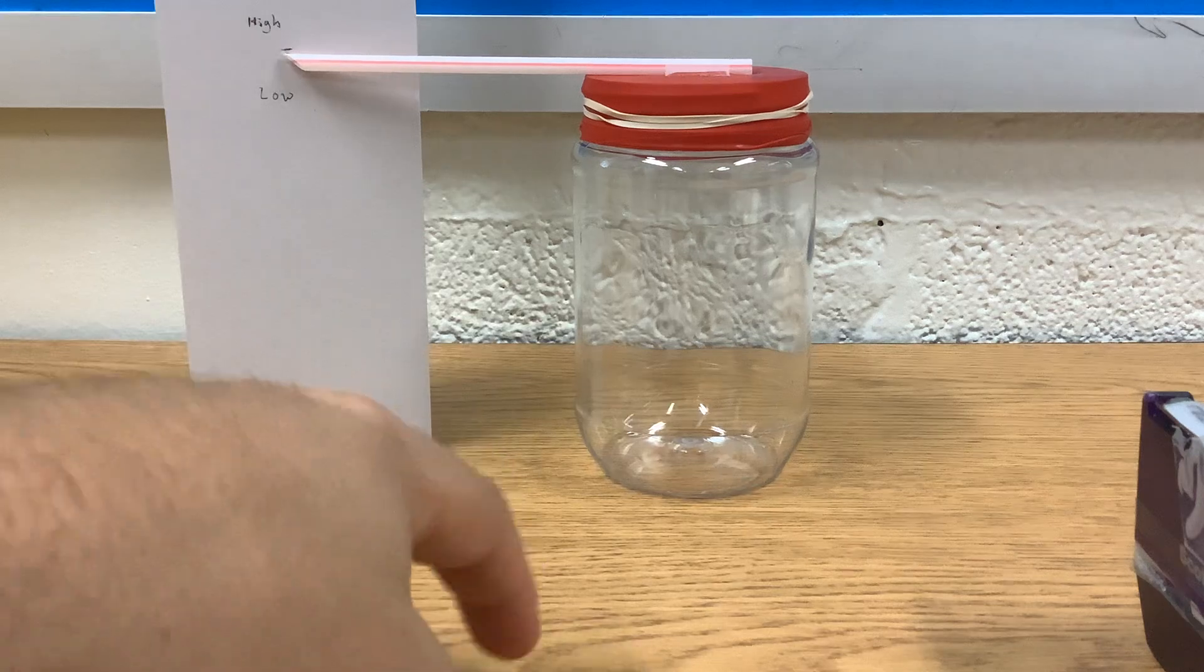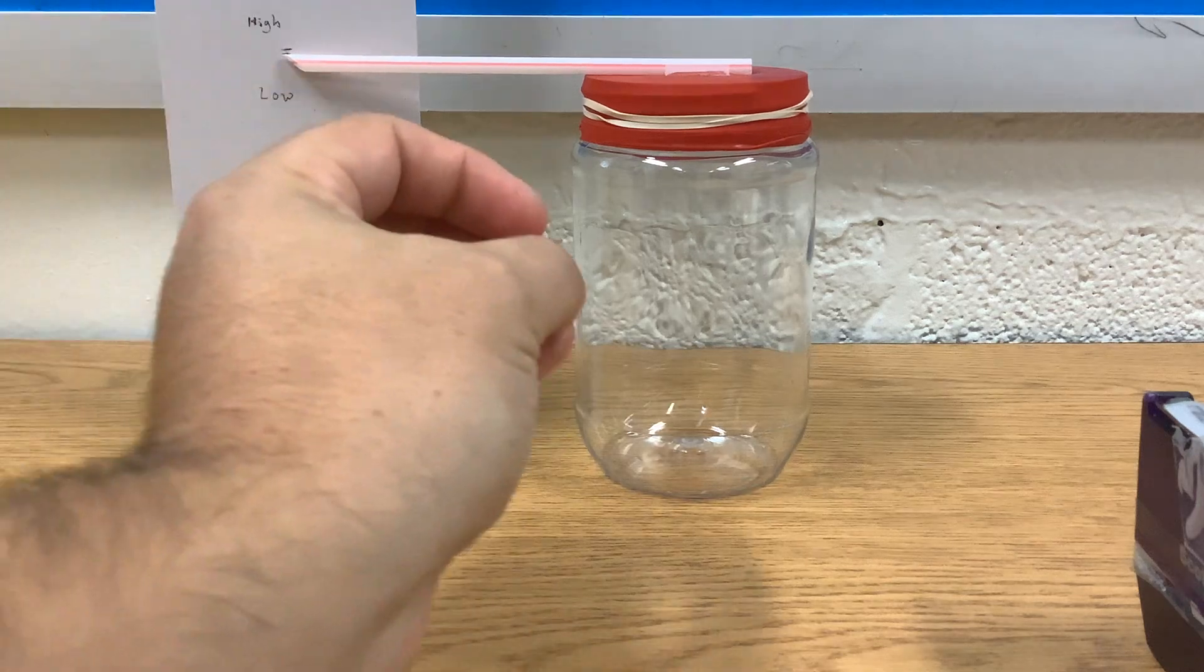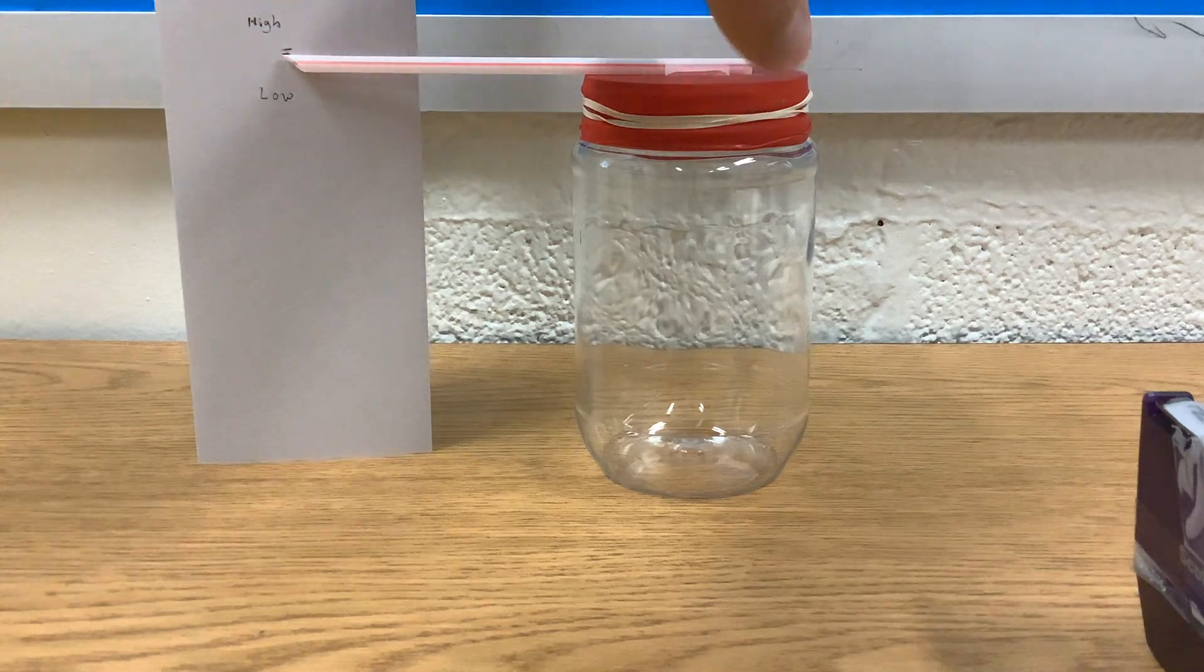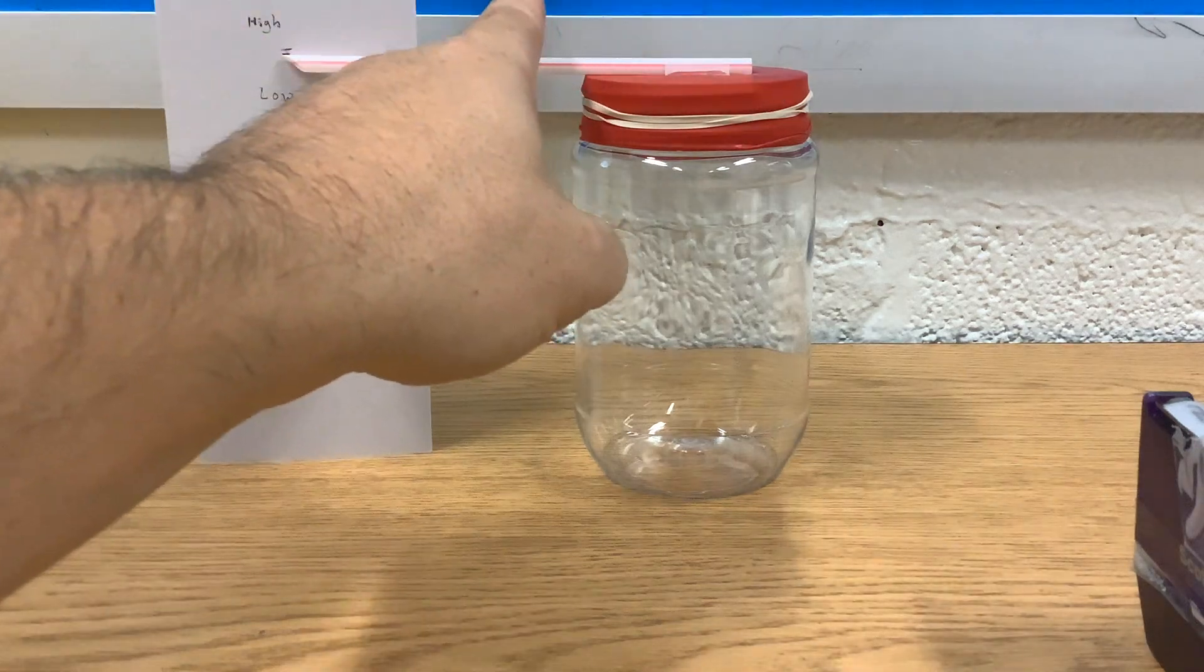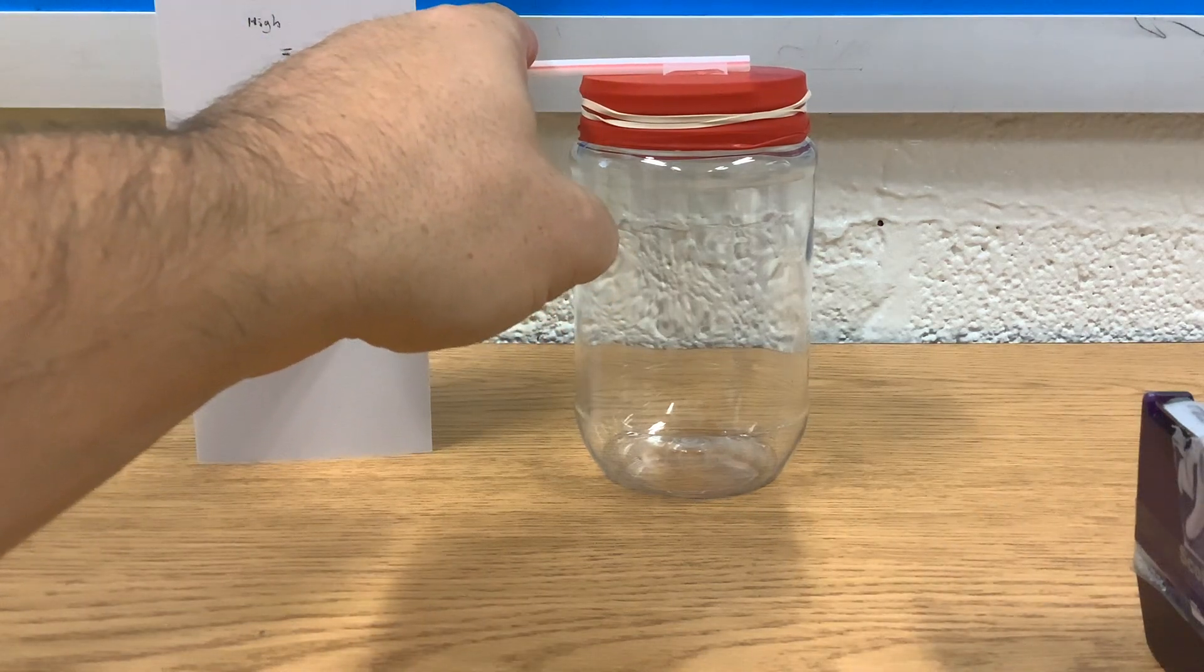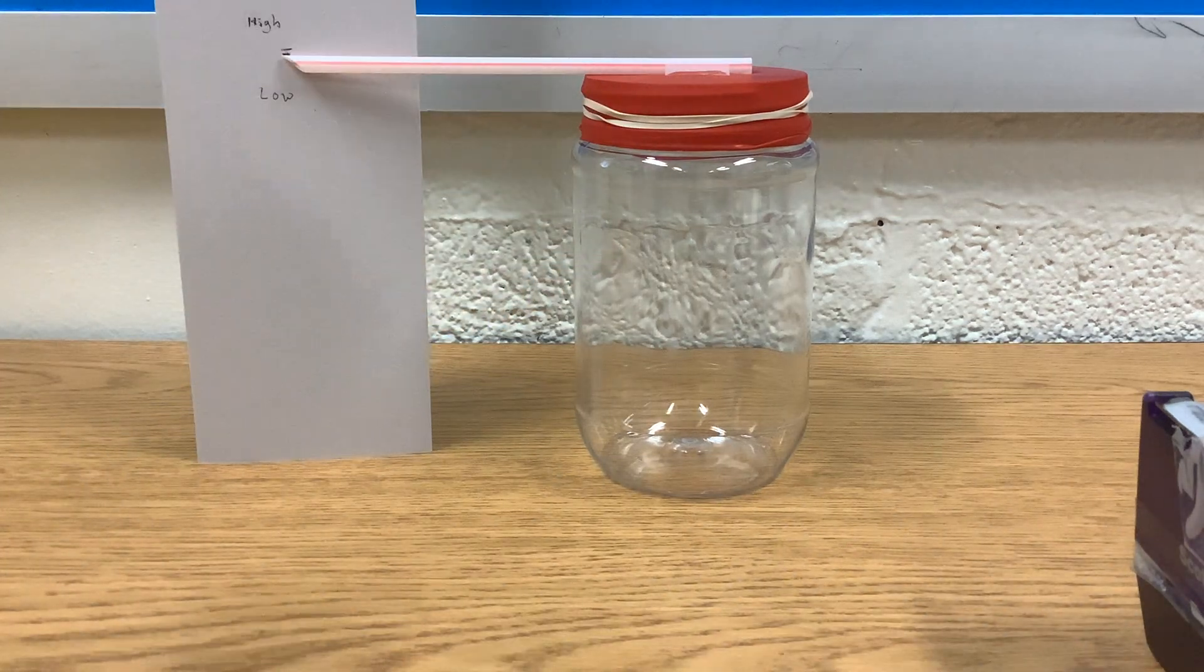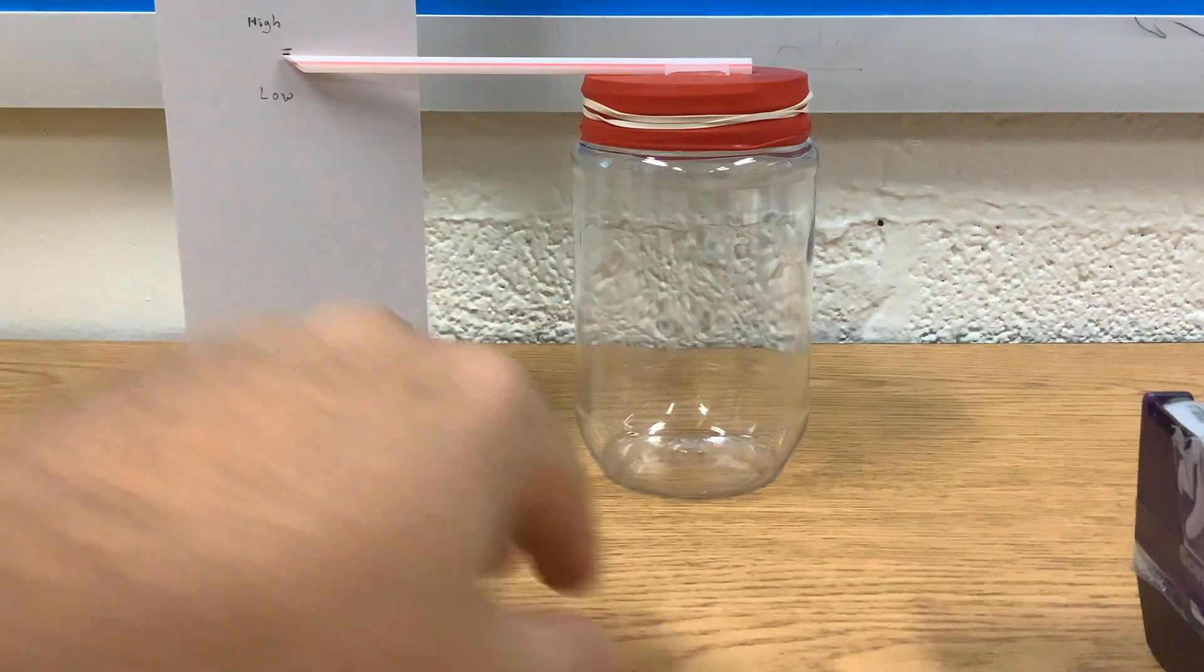If the air inside the jar is a higher pressure, it's going to want to get out of the jar and escape. So it's going to bulge like a bubble and that'll push the straw down. So we know that the air outside of the jar is a lower pressure than what is in the jar.